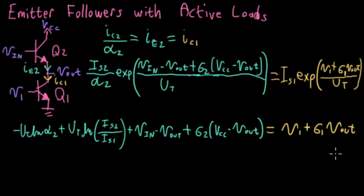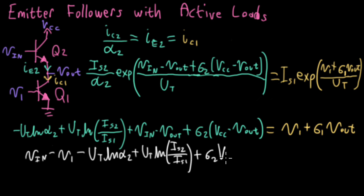So now what I want to do is I want to get all of the terms associated with VN together and all the terms associated with Vout together. So on the left, let me write VN and then all the constants. So I'll take this V1 and move it over to the left. So V1, and then I'll have minus UT log alpha2 plus UT log IS2 over IS1. And then I have the plus sigma2 VCC.